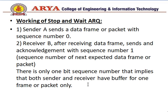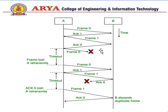Let's understand how Stop-and-Wait works. The sender sends a data frame or packet with sequence number 0. Receiver B, after receiving the data frame, sends an acknowledgement with sequence number 1, which is the sequence number of the next expected data frame. There is only one bit sequence number, which implies both sender and receiver have a buffer for only one frame or packet.